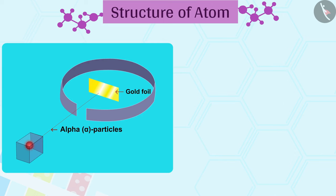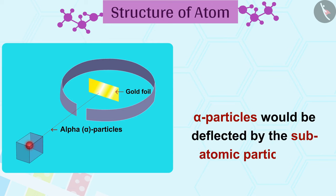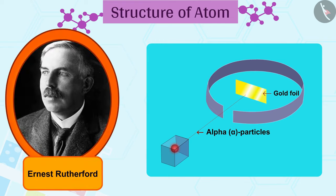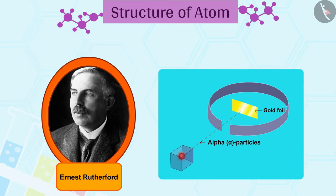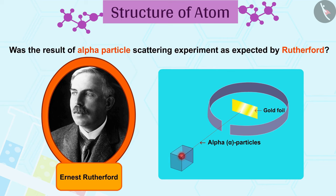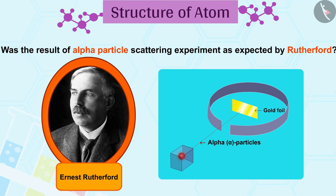It was expected that alpha particles would be deflected by the subatomic particles in the gold atoms. Since the alpha particles were much heavier than the protons, he did not expect to see large deflections. Was the result of the alpha particle scattering experiment as expected by Rutherford?